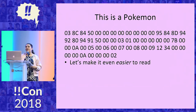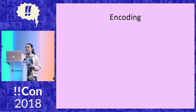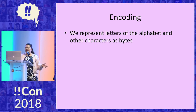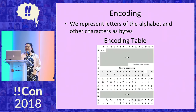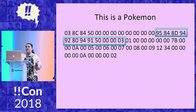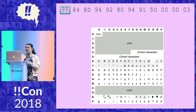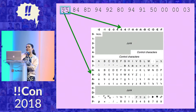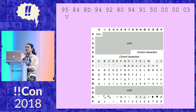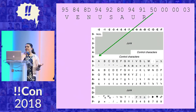The way we can change this into something parsable by humans is through encoding. Basically, we represent letters of the alphabet and characters as bytes, just like Unicode. We can use an encoding table — this is just from Bulbapedia — to decode a string, which in this case is a Pokemon's nickname. If we take the first byte, 95, we align the nine with the vertical axis and the five with the horizontal axis, and figure out where they meet in the middle — that's a V. We keep doing that for the whole string: Venusaur. The byte 50 is a control character that says the string has ended, and after that the rest is junk.